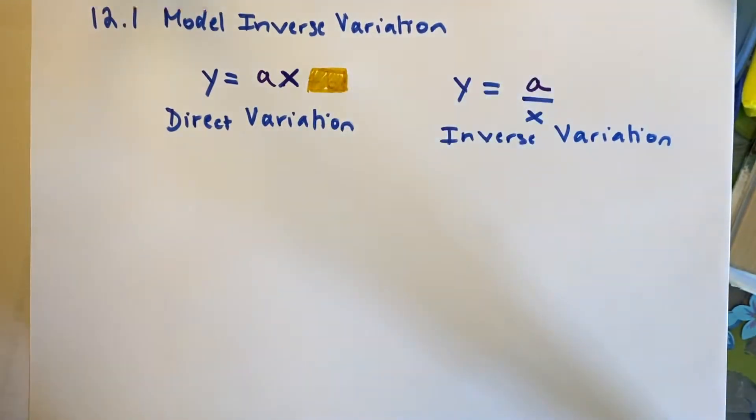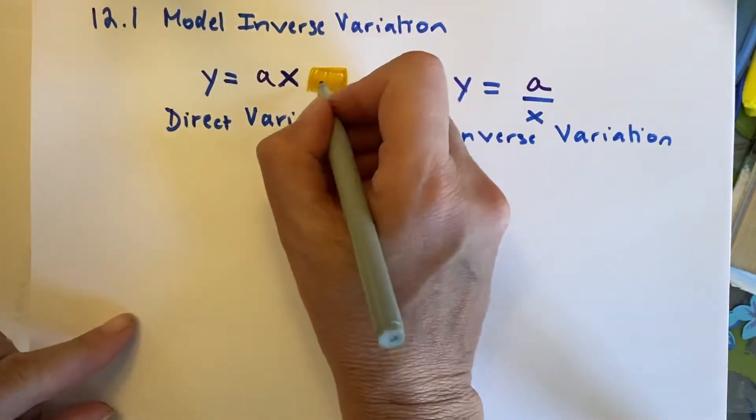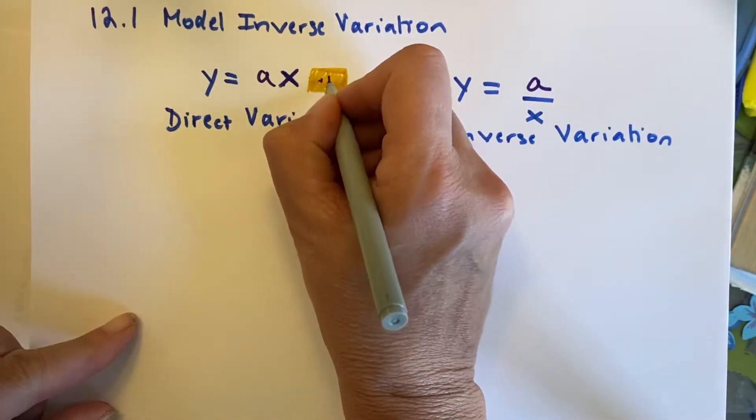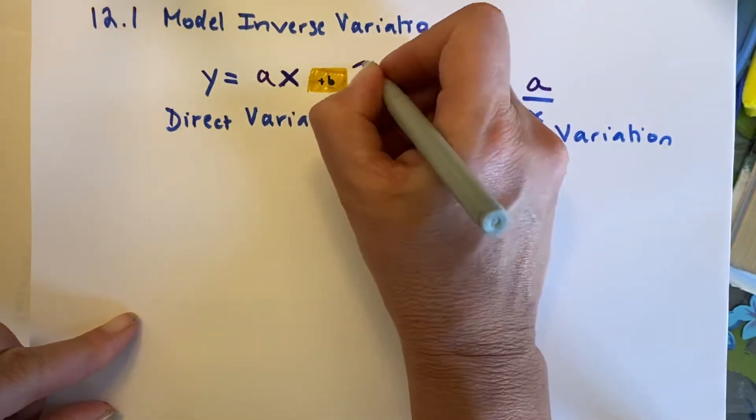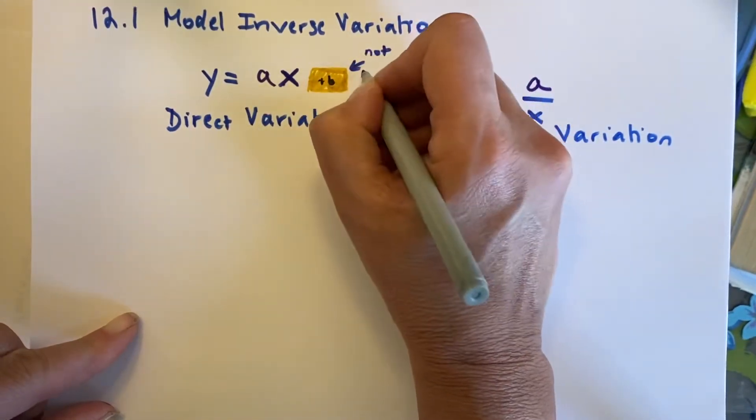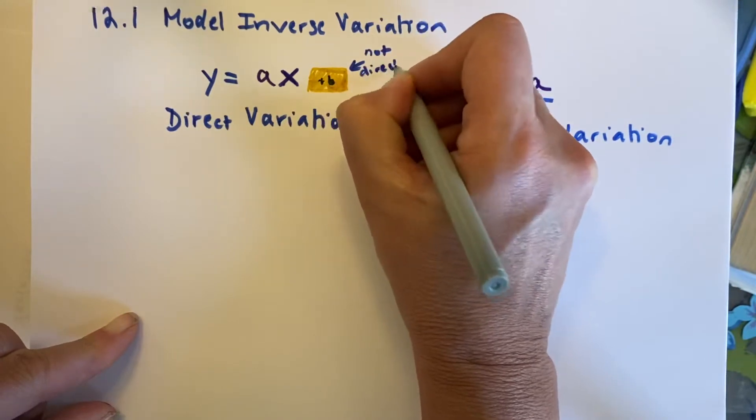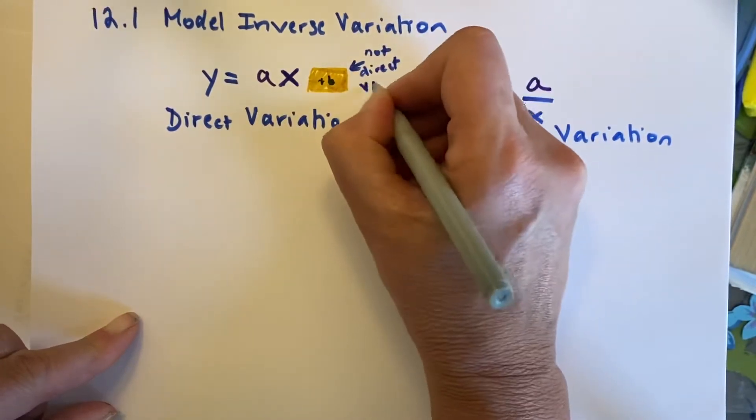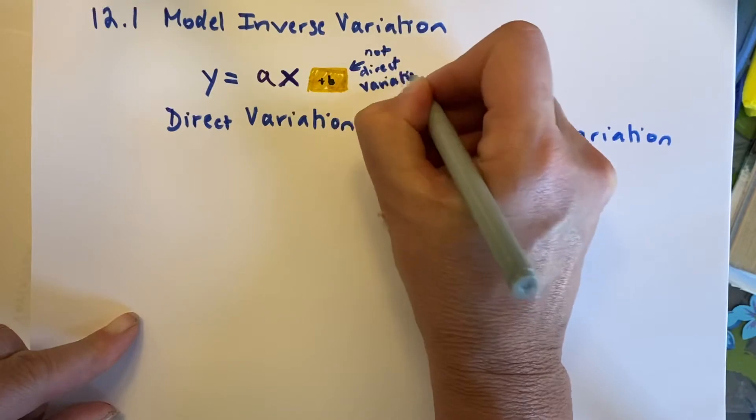I'm just going to cross this out. A direct variation is just y equals ax, period. There's no plus anything. Just so you know, what would have been here, it's plus b. But if the plus b is not direct variation, if you have a plus b, it's not direct variation.